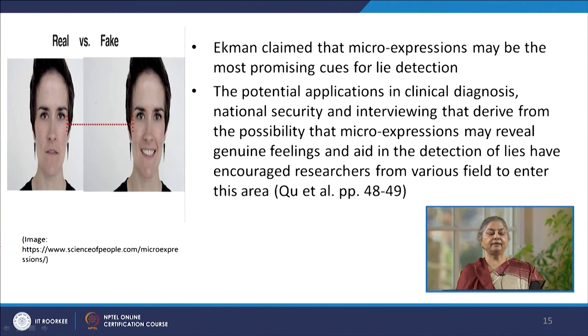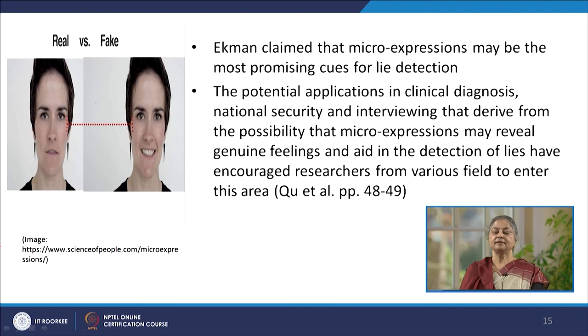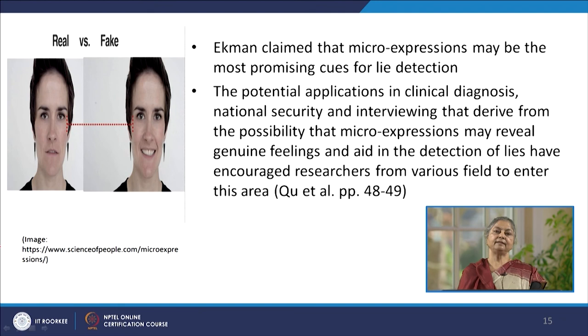In his research, Paul Ekman has claimed that micro expressions are perhaps the most promising cues for detecting a lie. One display of emotion is real, whereas in another, the same display is of a faked emotion — pointing out the difference between a true expression and the detection of a lie through a micro expression. Ekman's idea has potential applications in various fields — for example, they are significant in clinical diagnosis and for understanding contemporary threats to national security. The potential of this research has encouraged people from various fields to enter and study it in diverse ways.